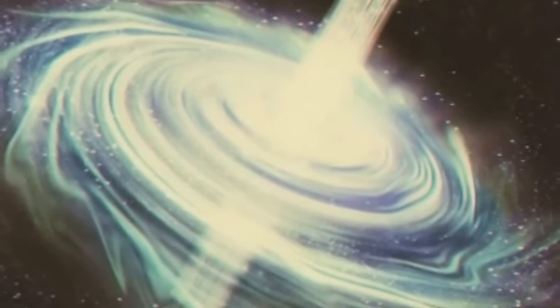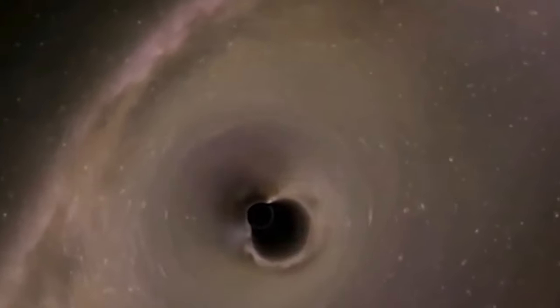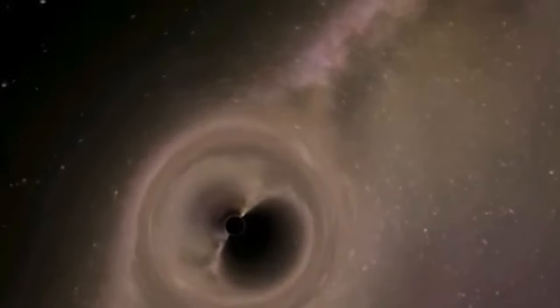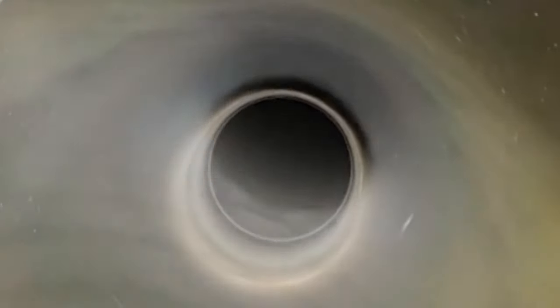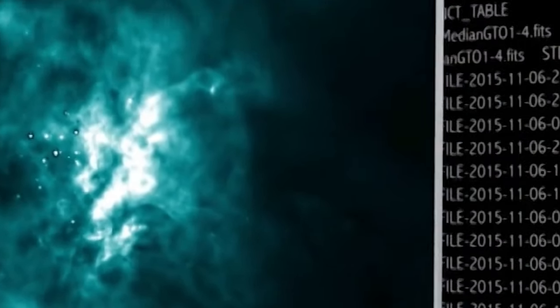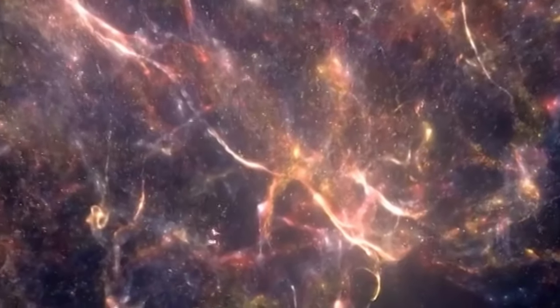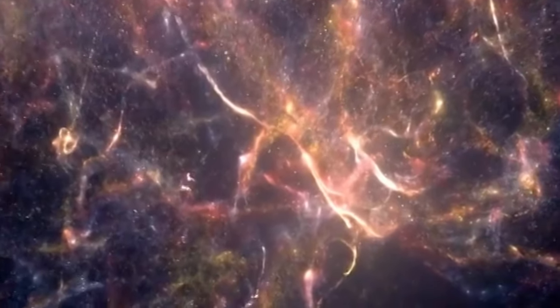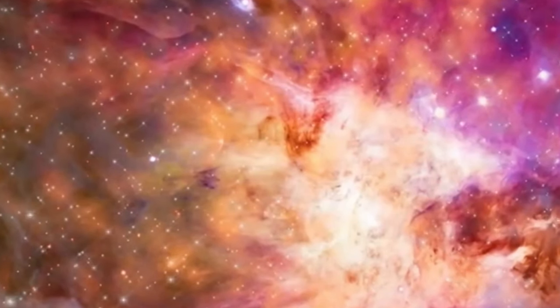As we venture deeper into the complexities of black holes, the narrative expands to encompass the captivating concept of white holes. Theoretical predictions arising from Einstein's field equations propose the existence of regions in space-time where matter and energy emerge in a manner opposite to the gravitational collapse of black holes. Unlike black holes, white holes only allow matter and energy to flow outward, creating an intriguing celestial dichotomy.